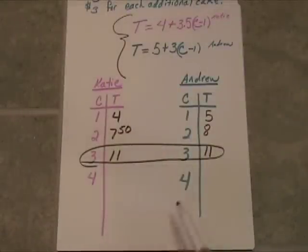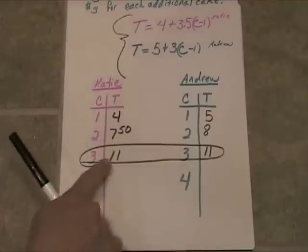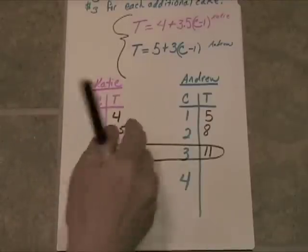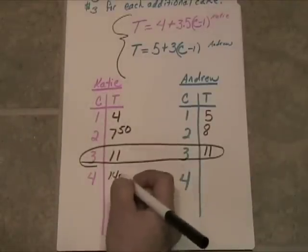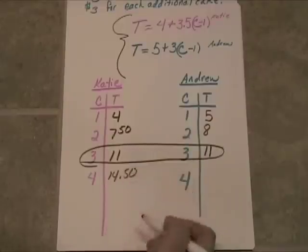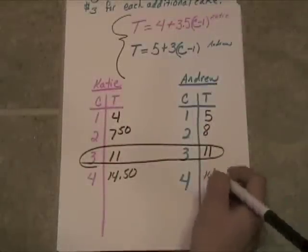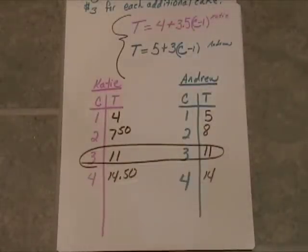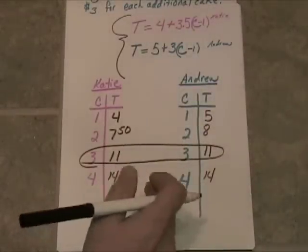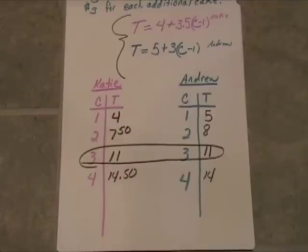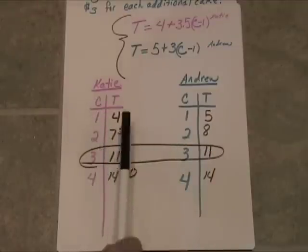Now, if the customer buys four cakes, Katie's actually going to be more expensive, because we have to add $3.50 to the $11.00, which will give us $14.50, and over here we only have to add three, which will bring us up to $14.00. So, from that point on, Andrew's always going to be less expensive. This is the point where they're the same, but if you're only buying one or two, Katie is the cheaper place.